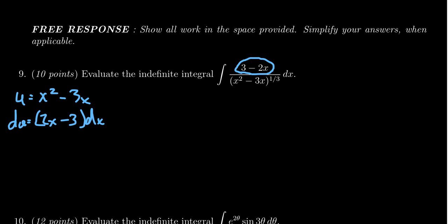So what that does for us is we can rewrite this integral. If I take out the negative sign you get negative two x minus three dx sitting on top of the x squared minus three x to the one-third power. That's perfect for what we need.